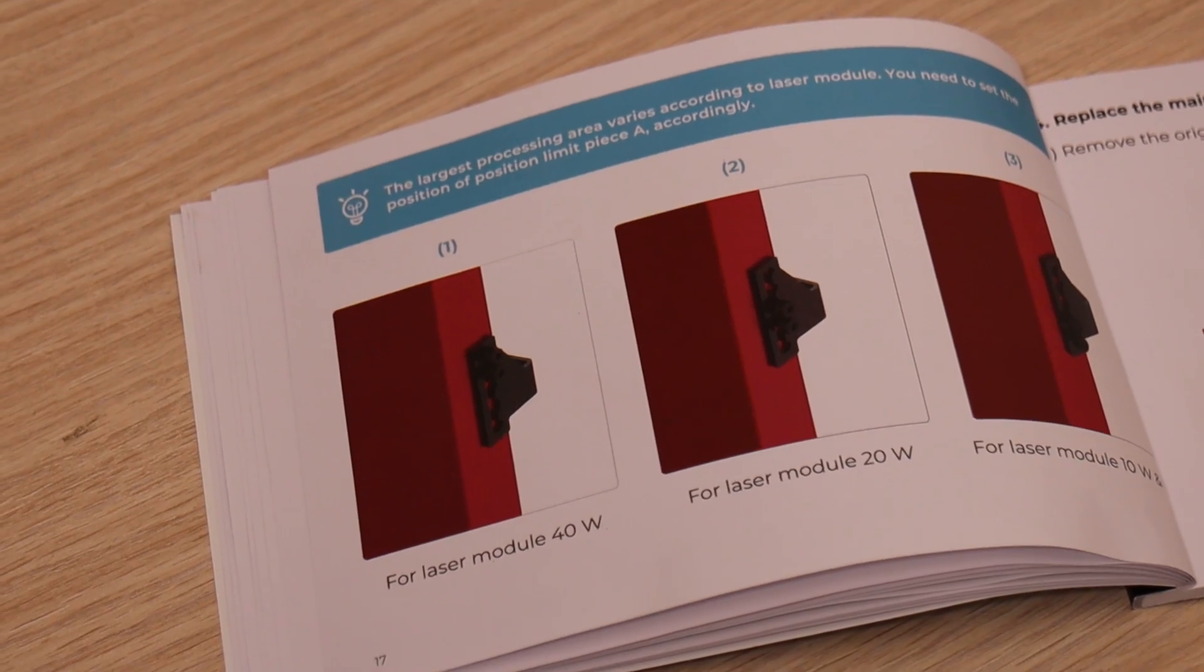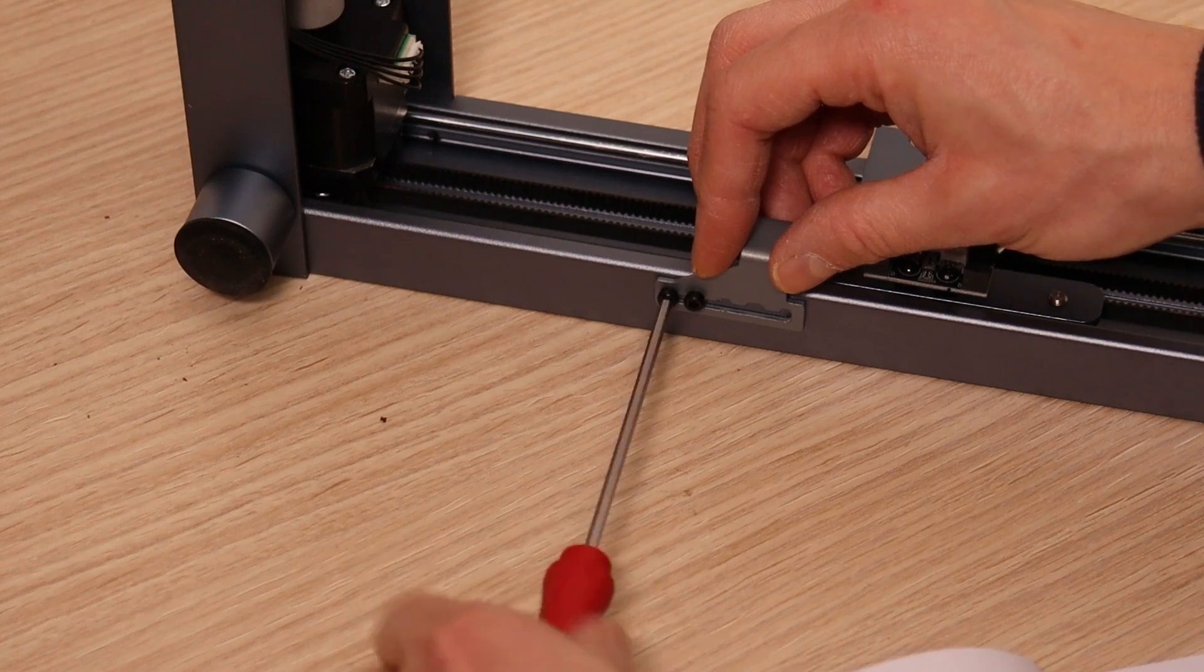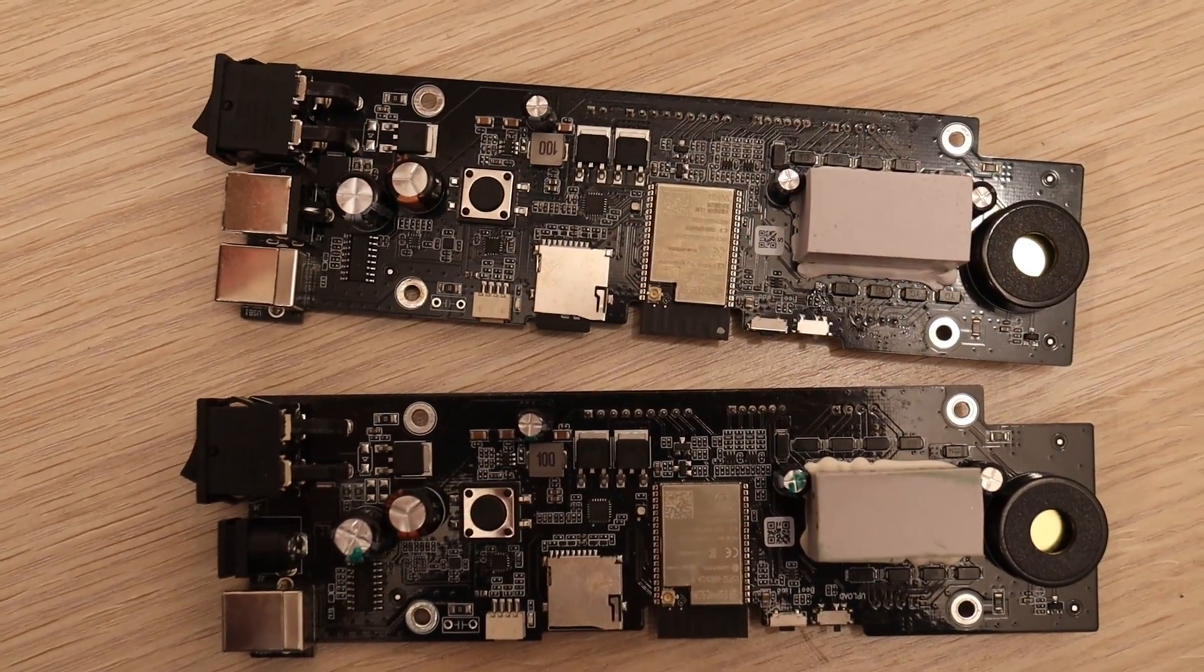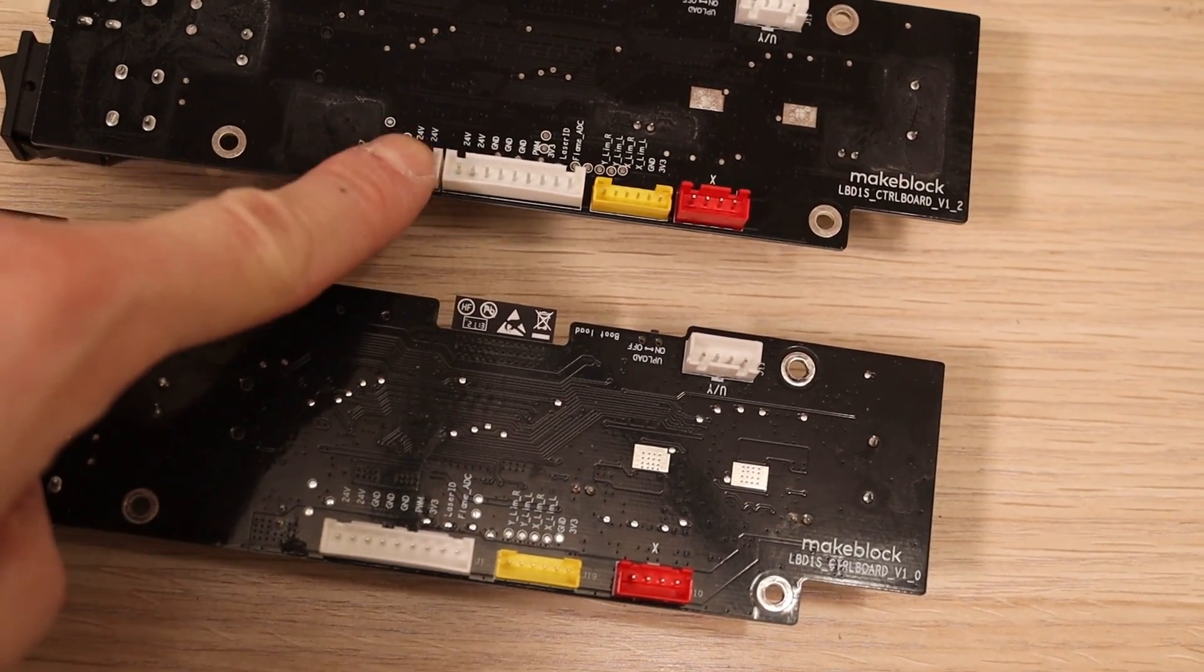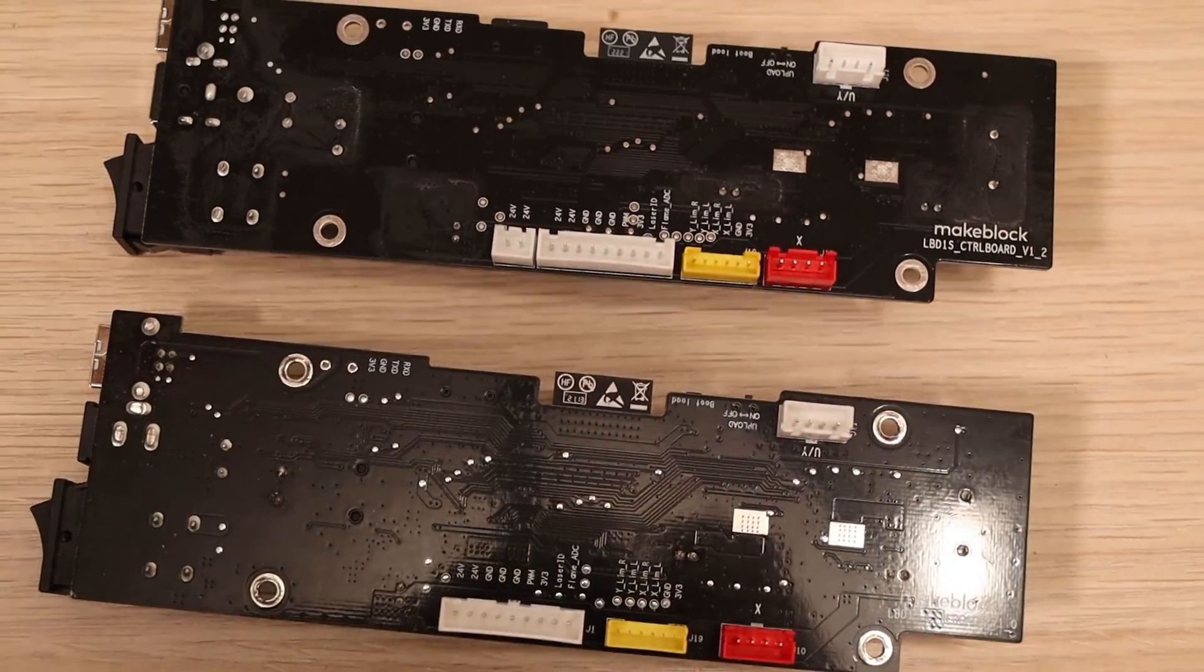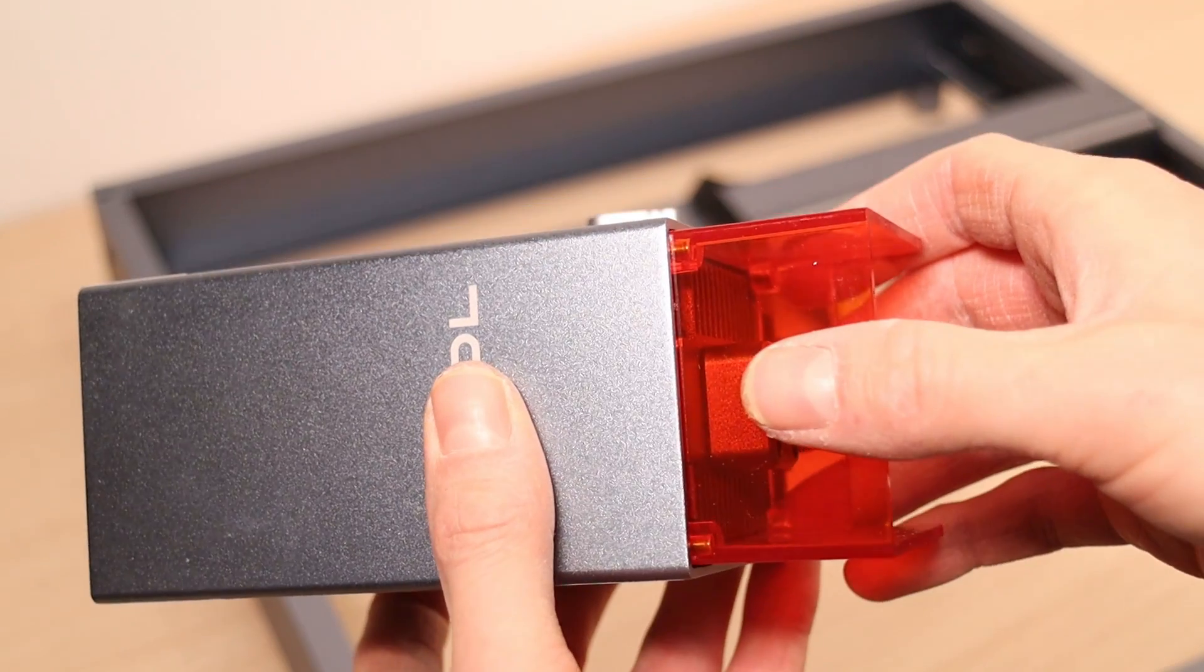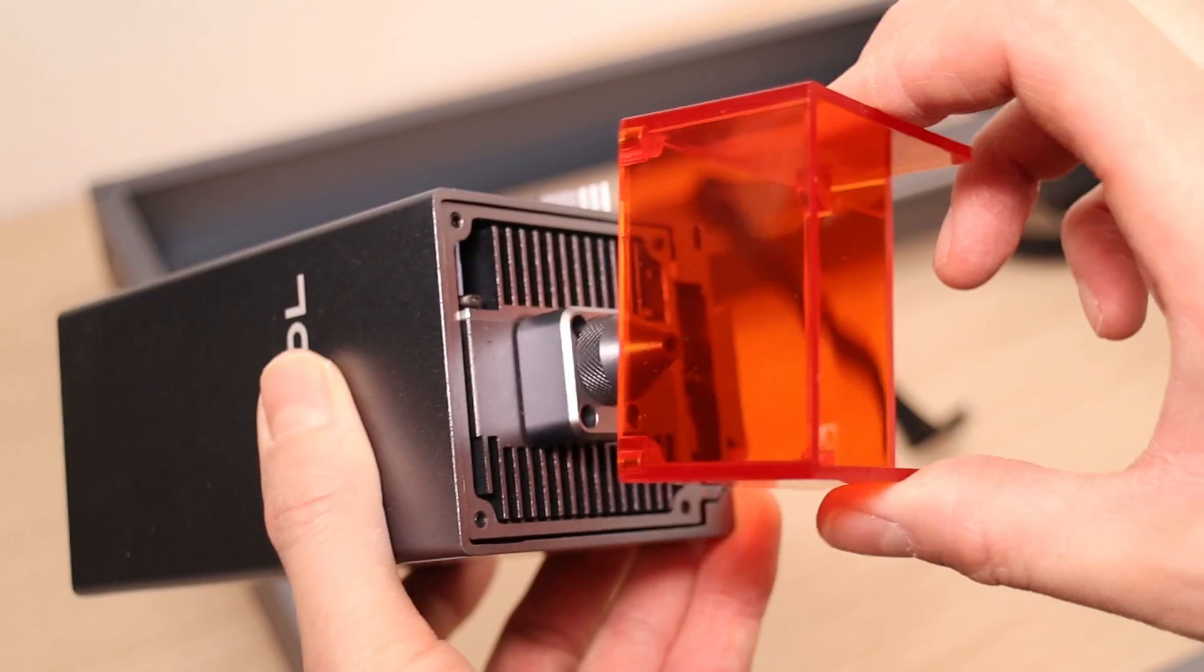The instructions are very clear and easy to follow. The new control board looks almost identical with the addition of another connector which is needed for supplying more current to the laser module. The module also has a very convenient magnetic light shield.